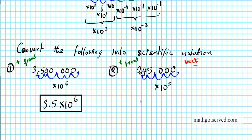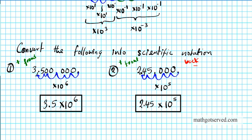My answer is 2.45 — a consequence of dividing by 100,000. To compensate, I put times ten to the fifth. So the answer is 2.45 times ten to the fifth. Five units to the front — that's why we have ten to the positive five.